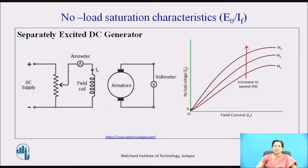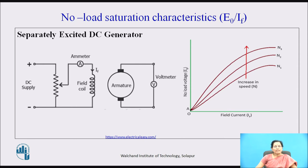In this graph, segment OA indicates the induced EMF in the armature when the field current is zero — this is due to residual magnetism in the field winding. As we increase the field current, the flux increases and the induced EMF is directly proportional to flux, so the no-load induced EMF increases linearly. After that, even though we increase the field current, the flux remains practically constant after saturation of the field coils, and then the induced EMF remains constant.